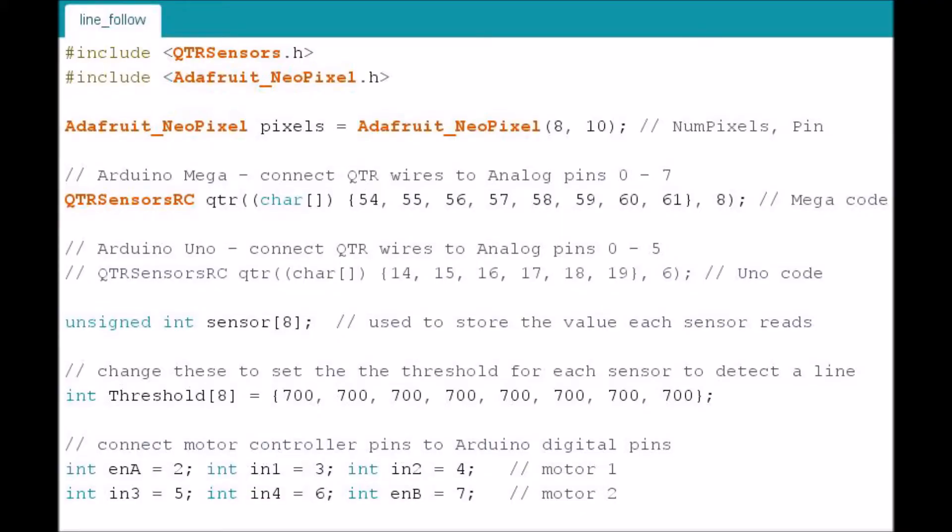Here's a look at the code that I have included on the web page. At the top, we need to include two libraries, the QTR sensors and the Adafruit NeoPixel. Then underneath that, we initialize the Adafruit NeoPixels. We put those on pin 10 and the number of pixels is 8. So you can change that if you put it on a different pin.